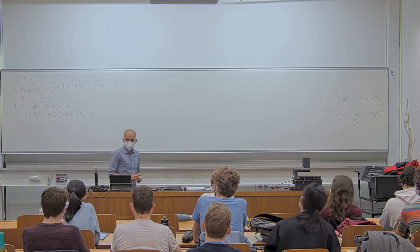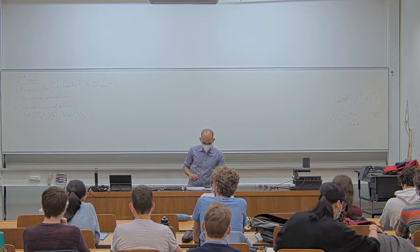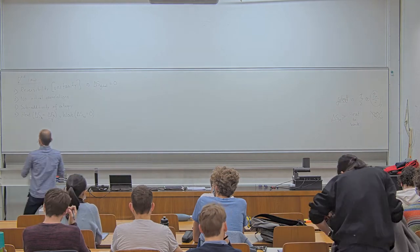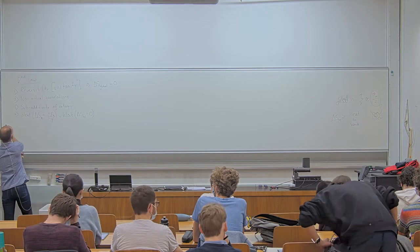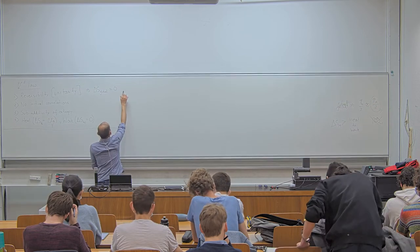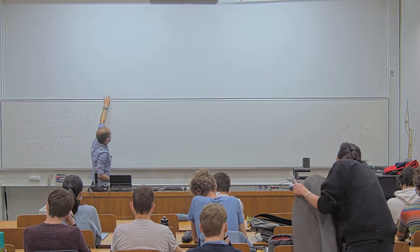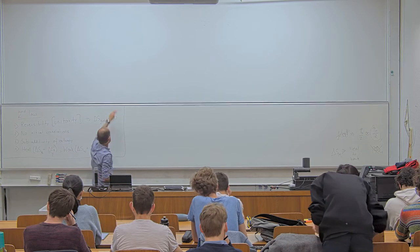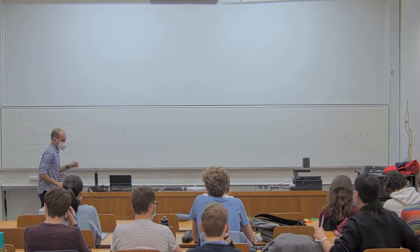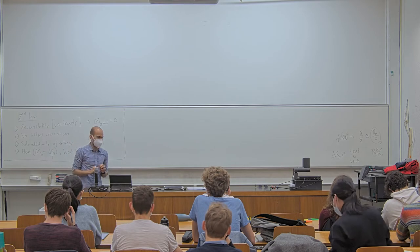If you put these four ingredients together in any protocol, you end up with some inequality telling you what the second law of thermodynamics looks like in that case. The second law is another version of a no-go theorem — I cannot do something. But now I want to discuss the converse: what can I do?